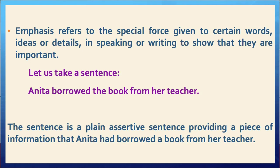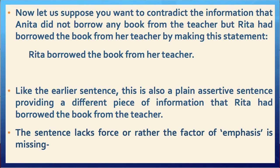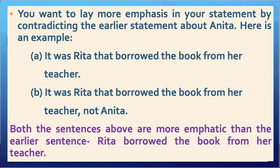Let us take a sentence: Anita borrowed the book from her teacher. This is a plain assertive sentence providing the information that Anita had borrowed a book from her teacher. Now, suppose you want to contradict this — that Anita did not borrow the book, but Rita had. The sentence Rita borrowed the book from her teacher is also a plain assertive sentence. To add emphasis, we say: It was Rita that borrowed the book from her teacher, or, It was Rita that borrowed the book from her teacher, not Anita.